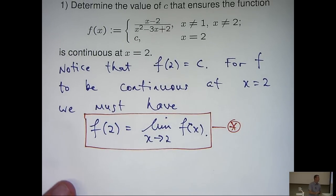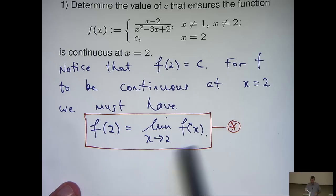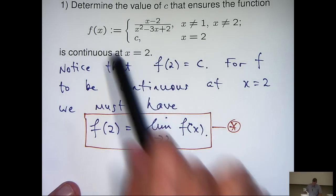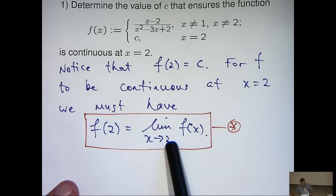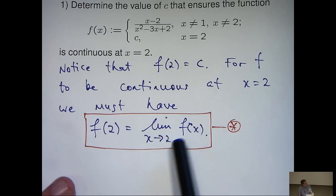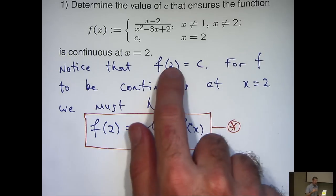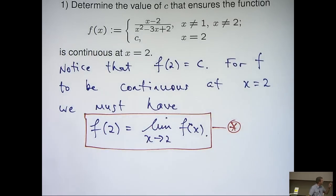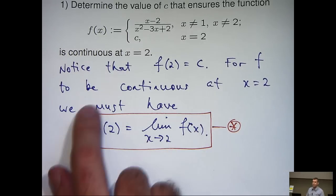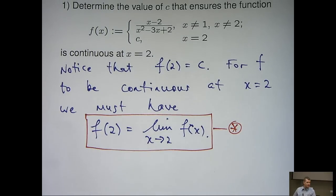So, what I'm going to do is consider this limit here and try to take the limit of f of x as x approaches 2. And if I get a finite number, then I'm actually going to define c, or f of 2, to be equal to that limit. So that this star equation balances.